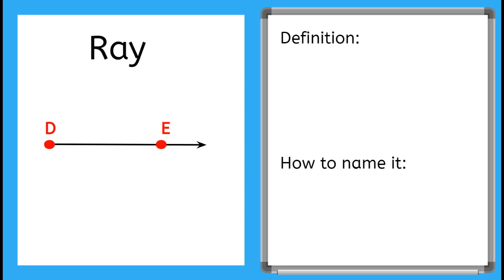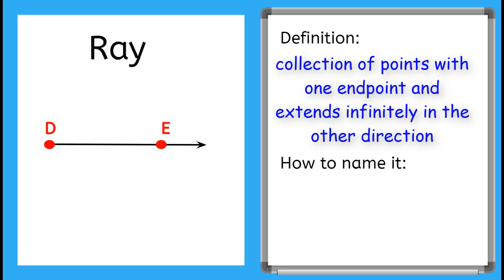Now we have a ray. Like a ray of sunshine that starts at the sun and spreads out forever, a ray has one endpoint but extends in the other direction infinitely. Notice that there are two points on this ray. One of the points is at the endpoint, point D, and point E is on the ray. To name the ray, we use the two points and a symbol. The symbol looks like a little ray above the letters.